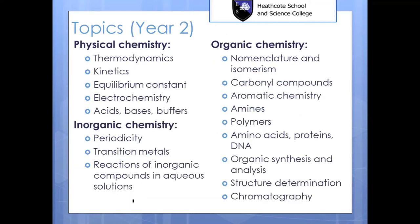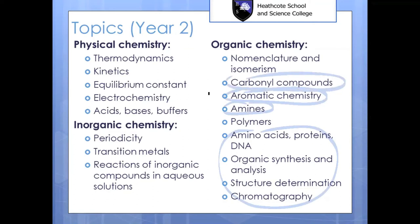In year two — the second year of your A-level — you build on your AS knowledge and learn a lot of new things. If you've looked at the pH scale from one to fourteen before, you'll now learn all the mathematics behind how pH is calculated for different types of solutions. You'll also learn about reactions of transition metals, which you didn't cover in GCSE, and there's a large section of organic chemistry you wouldn't have seen before, especially aromatic compounds.